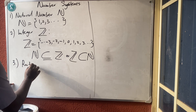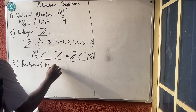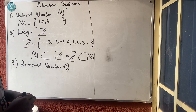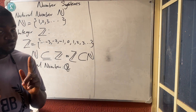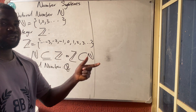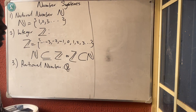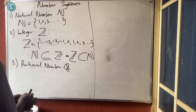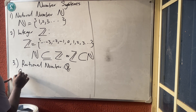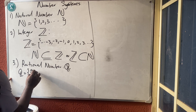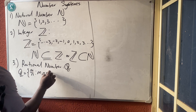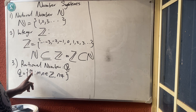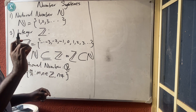Number three, we are going to talk about the rational numbers, represented as Q. Rational numbers are simply fractions of integers where the denominator is not zero. If you take any numbers from the integers and put them in fraction form, you are talking about a rational number. We define rational numbers as the set of M over N, such that M and N are elements of integers and N, the denominator, must not be zero.